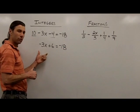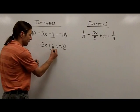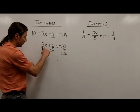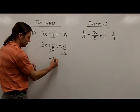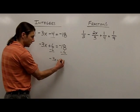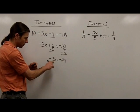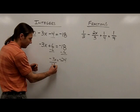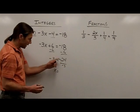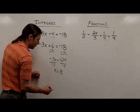Now we're down to a familiar type of equation. I have to undo the addition of 6, so I subtract 6 from each side. That leaves negative 3x on the left. Negative 18 plus negative 6 gives negative 24. One last step: to undo multiplication by negative 3, I divide by negative 3. Negative 24 divided by negative 3 gives me positive 8 for my solution.